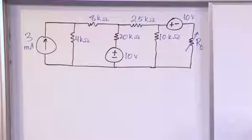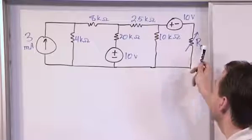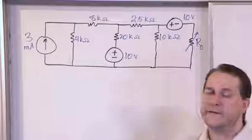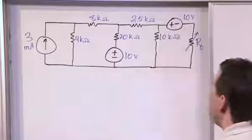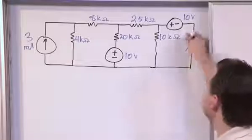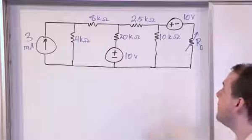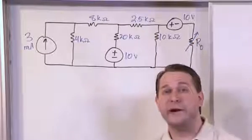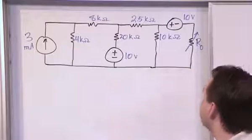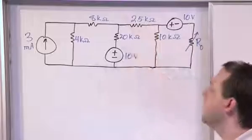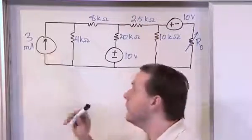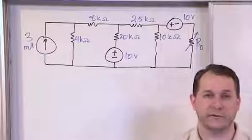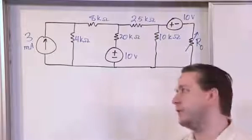The value of R naught needed is going to equal the Thevenin resistance of the rest of the circuit looking back from those terminals. We find the Thevenin resistance, and that's the value of R naught needed. Now, because there are no dependent sources in this circuit, we can short-circuit all voltage sources and open-circuit all current sources. That leaves us with a simple resistor network we can solve using series and parallel combinations.